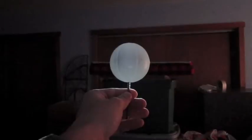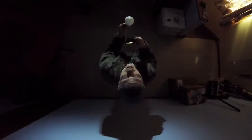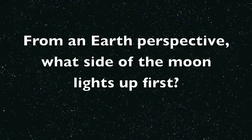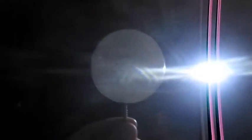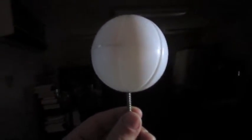The moon is actually right next to the sun in terms of our viewing perspective. Now, which side of the moon lights up first — the left or the right side? If you look from a top view, the moon is going to go around the earth in a counterclockwise revolution. And a counterclockwise revolution makes it so the right side of the moon lights up first.